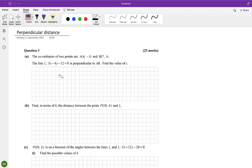Okay, so the coordinates of two points are A(4,-1) and B(7,t). The line L1: 3x - 4y - 12 is perpendicular to AB. When I see this, I'm thinking slopes.